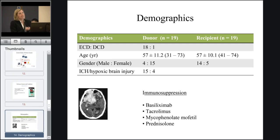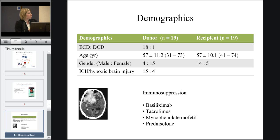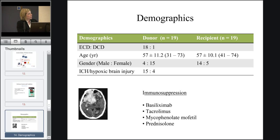We've performed 19 of these cases in Leicester — 18 from extended criteria donors and one from a DCD donor. The average donor age was 57, and in four cases the donors were male and 15 were female. The majority of deaths were caused by an intracranial haemorrhage. All kidneys were transplanted successfully. Average recipient age was 57 years, 14 were male and five female. All patients were treated with the same standard immunosuppressive protocol.